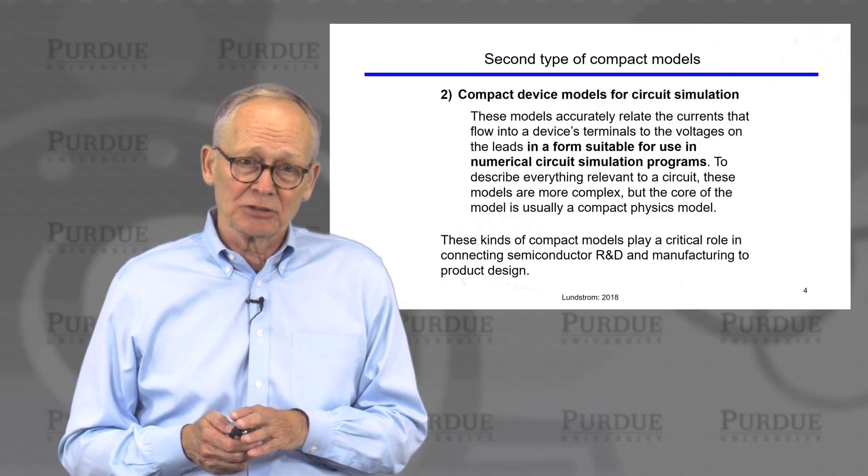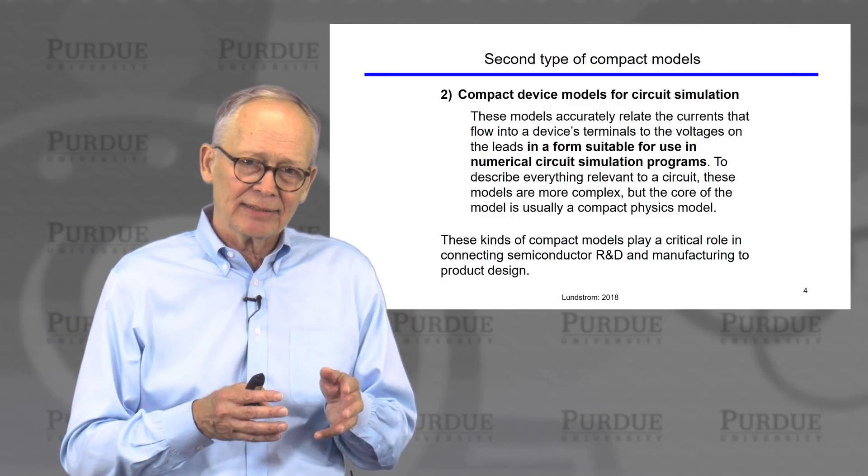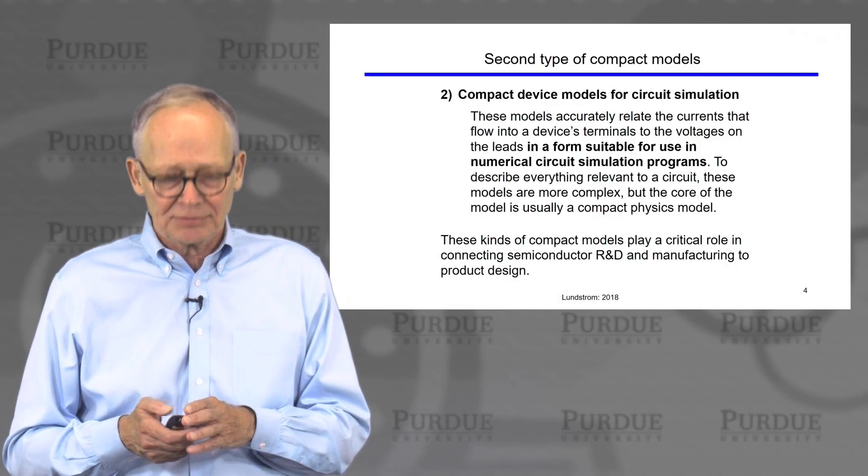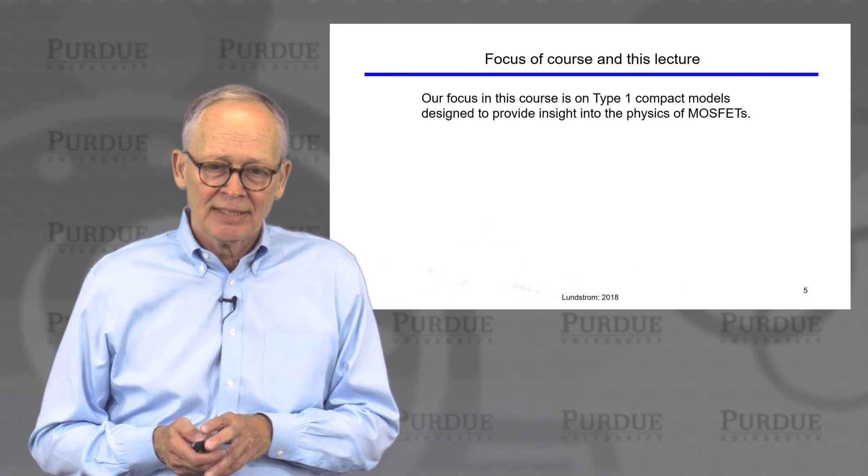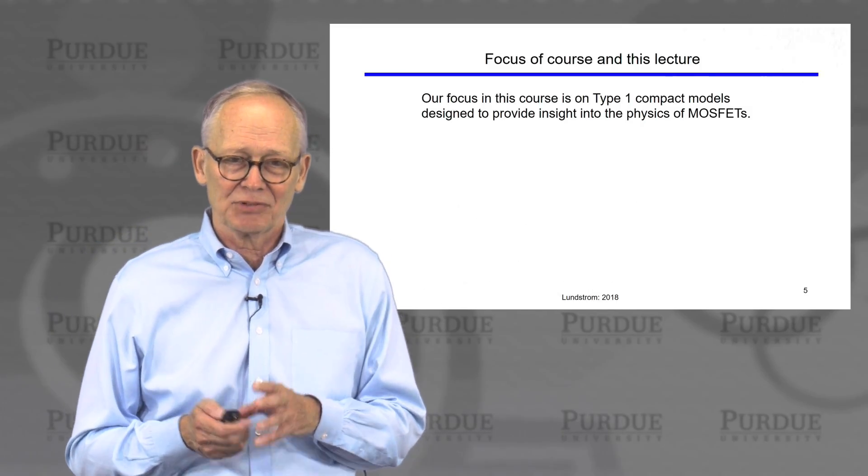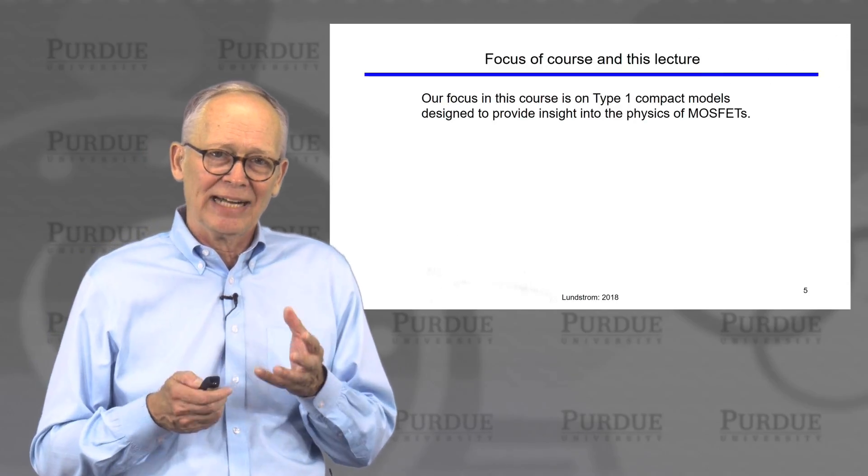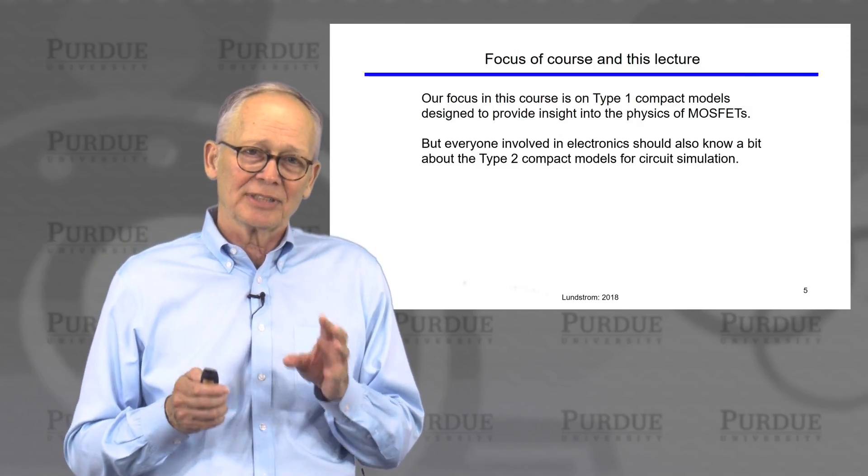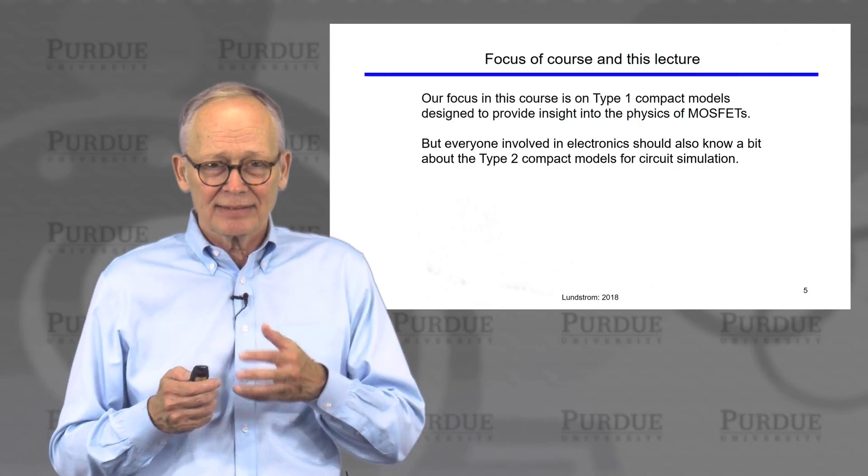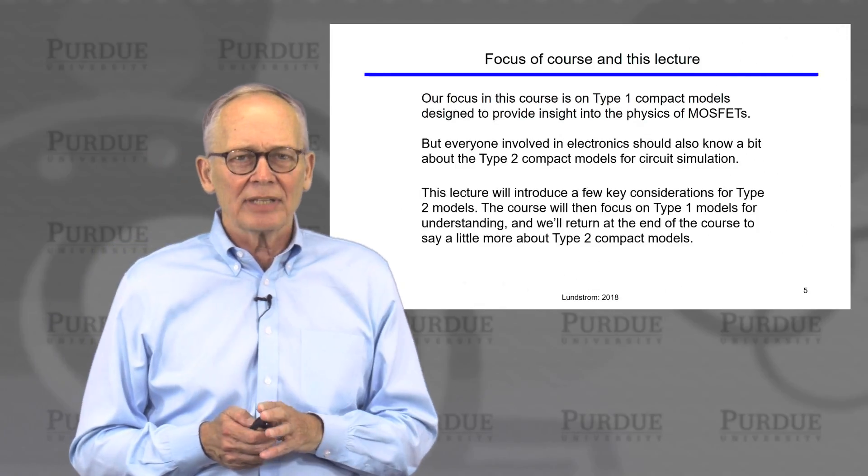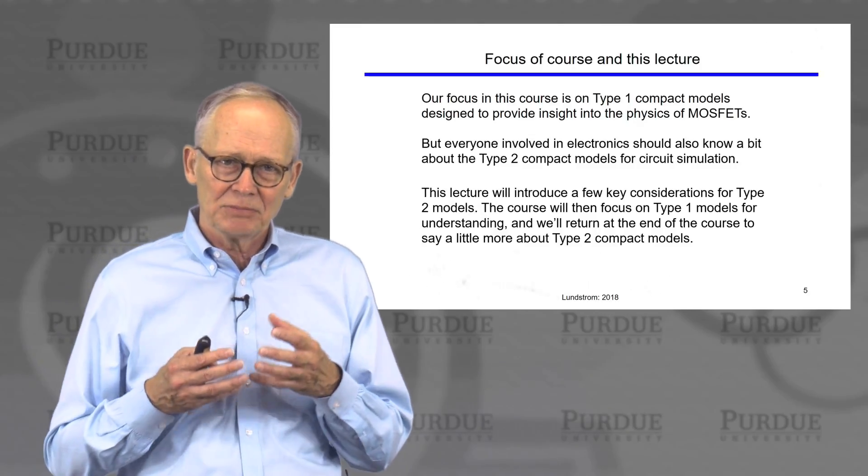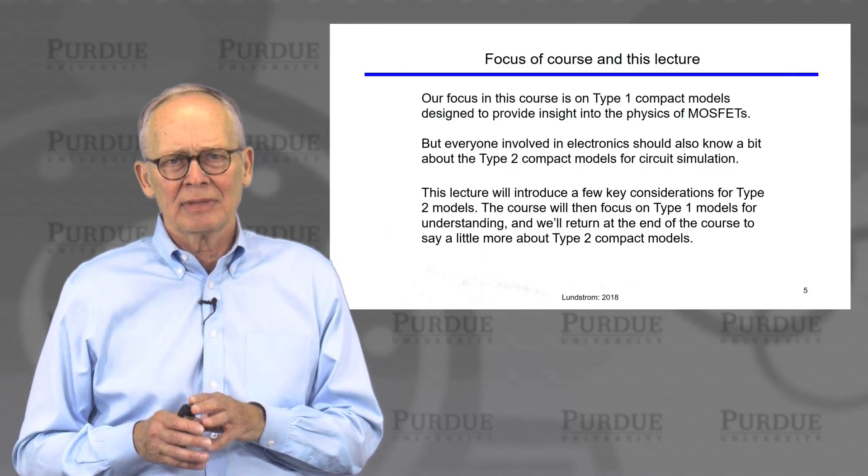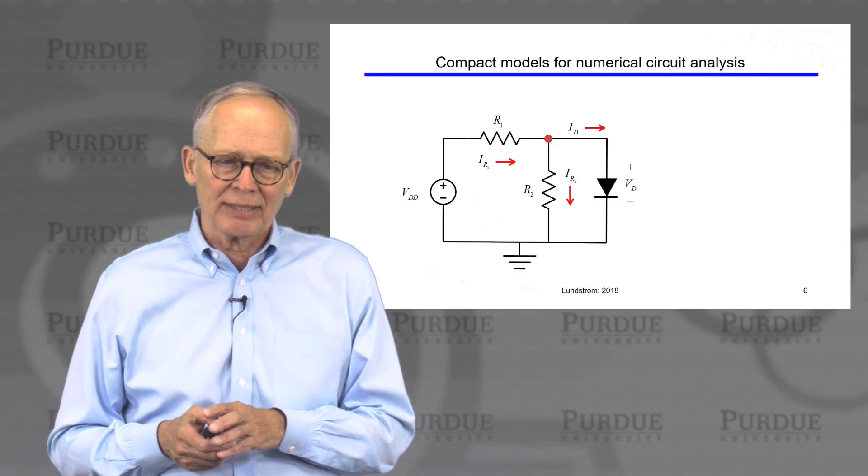These kinds of models play a very critical role in connecting semiconductor manufacturing and research and development to the actual product design and the design of circuits and systems. Our focus is on the first type of compact models, trying to use them to provide insight into the operation of transistors. But everyone involved in electronics should know something about the second type because this is the way we interact with designers. This lecture is just about a few key considerations for compact circuit models.